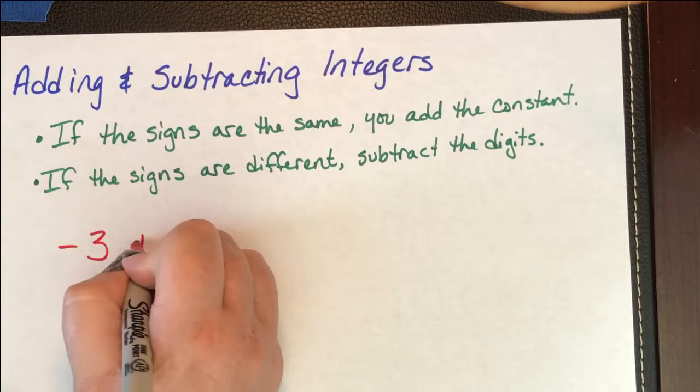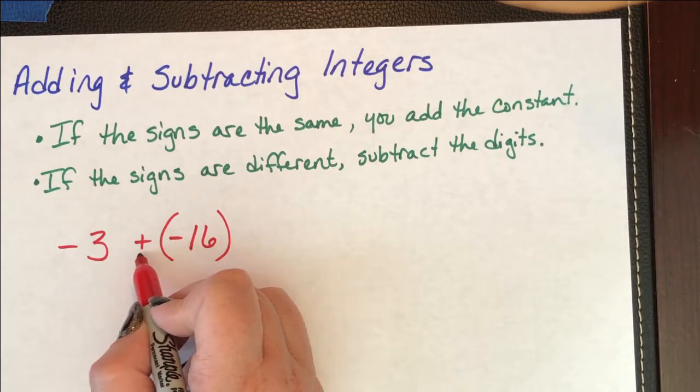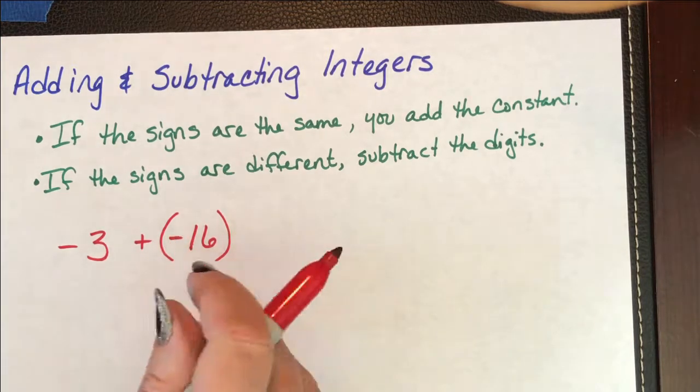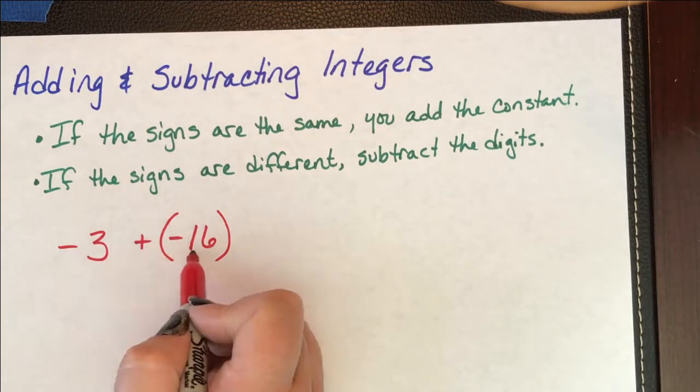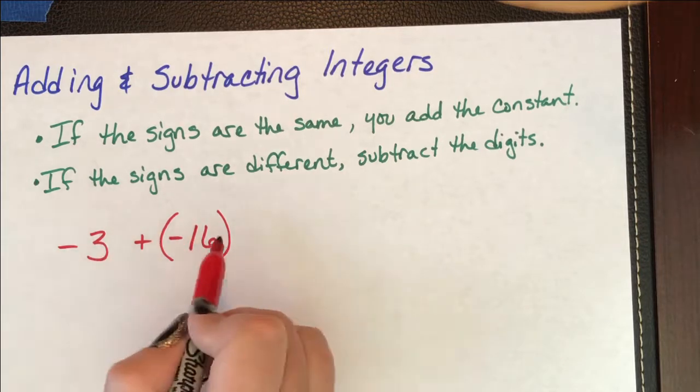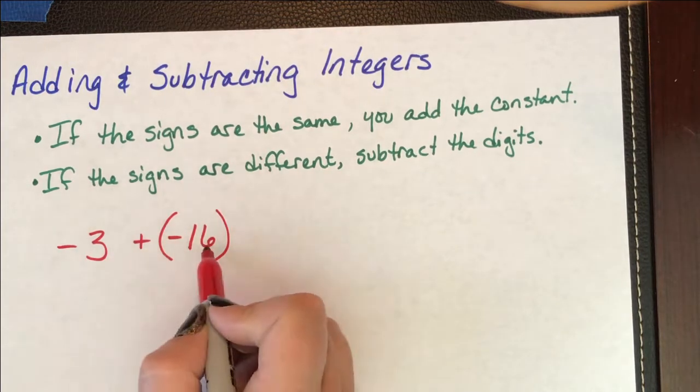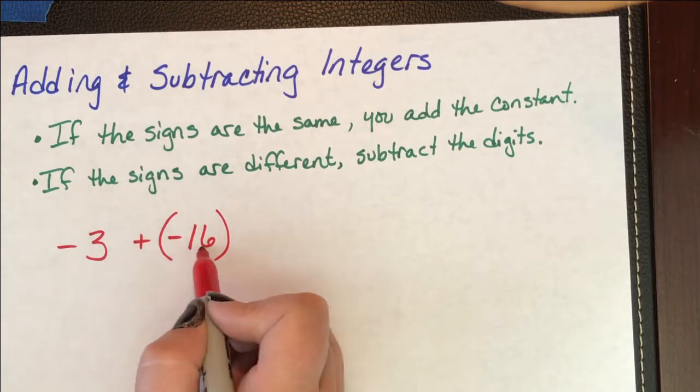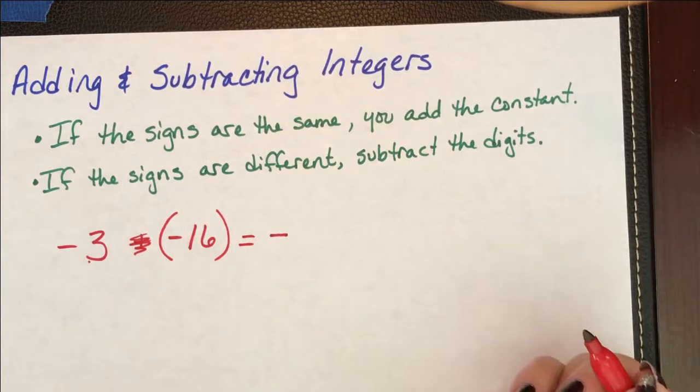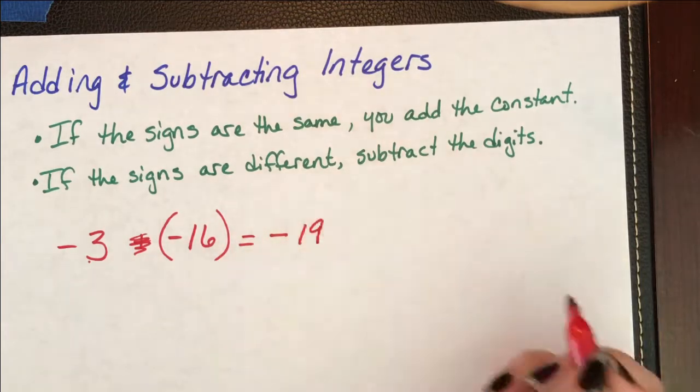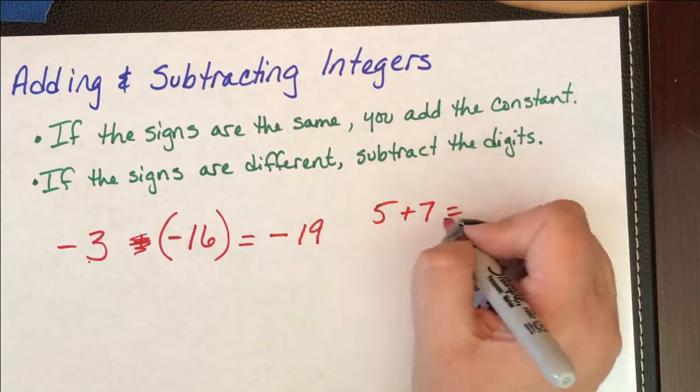So we have negative three plus negative 16, and they put this negative 16 in parentheses to separate this sign from this sign. The only time you're going to have two signs right next to each other like that is in a chapter that's teaching you positive and negative numbers. If I'm going to add a negative number and a negative number, this is a negative number. I am putting another negative number here. So I've got a negative number and another negative number, and when I combine two negative numbers, I'm going to get a bigger negative number. When I combine three and 16, I'm going to get 19. Just like if I had a positive five and a positive seven, I have two positive numbers. I'm going to add them and get 12.